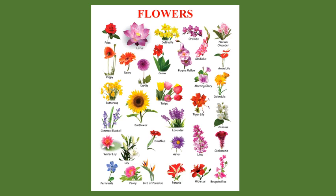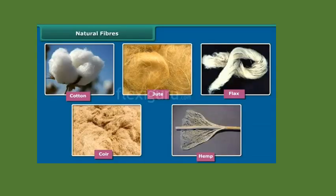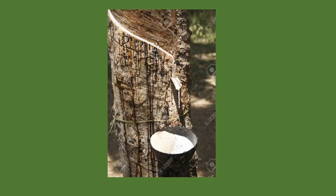Look at all the flowers and remember all their names — you will get surprised and enjoy them too. I have given very beautiful flowers for you — please see these videos and enjoy. For fibers, there are five main fibers: cotton, jute, flax, coir, and hemp. These are used to make clothes, so identify them clearly and note them down.